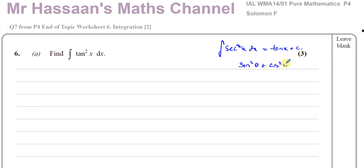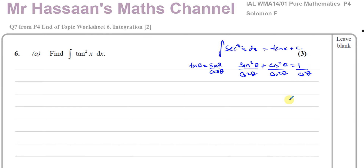Everyone should know that sin²θ + cos²θ = 1, and also that tan θ = sin θ / cos θ. If we combine these, I want to end up with tan²x, so I'm going to divide both sides of the equation by cos²θ. Dividing both sides by cos²θ, I'm left with tan²θ + 1 = sec²θ. So I can say that tan²θ is the same as sec²θ minus 1.